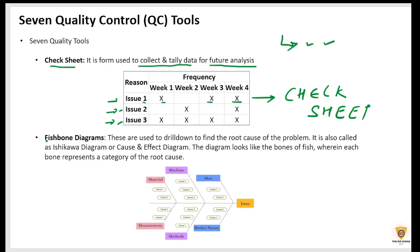The second one is a fishbone diagram wherein fishbone diagrams are mainly used to go ahead and check the root cause of a problem, right? So we go ahead and bifurcate the issues that we have in material, machine, man, measurement, method and mother nature. And here we have the main issue that we have or the issue for which we want to go ahead and check the root cause.